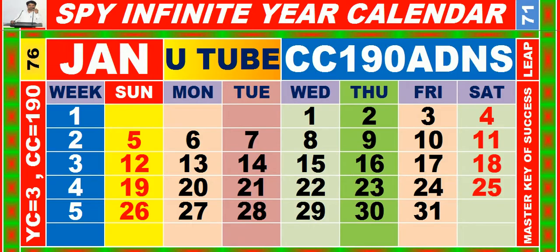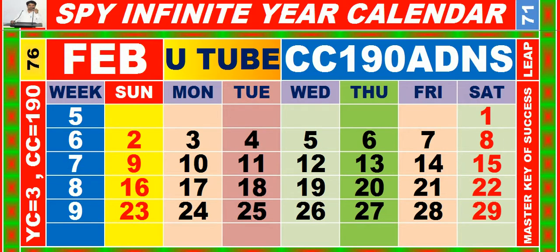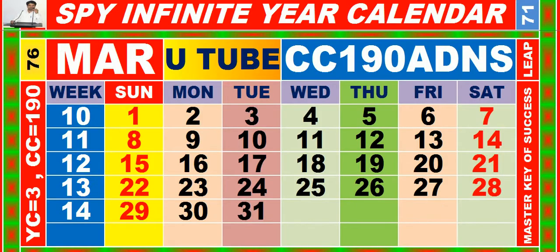Calendar for the month of January having calendar code equal to 190. Calendar for the month of February having calendar code equal to 190. Calendar for the month of March having calendar code equal to 190.